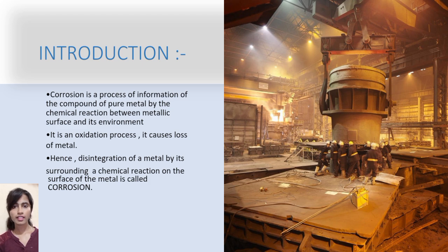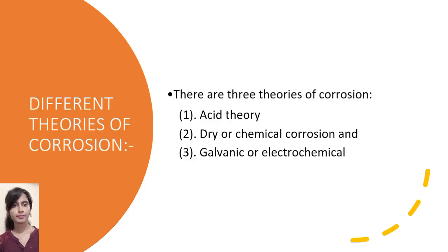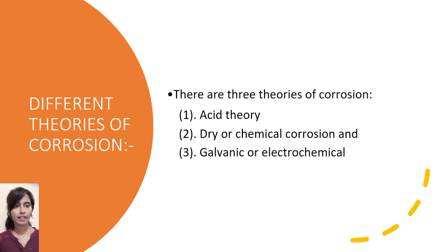So that was the introduction of corrosion. Here are the different theories of corrosion. There are three types of theories. First is acid theory. Second, dry or chemical corrosion. Third, galvanic or electrochemical corrosion. Let us see what the acid theory is.